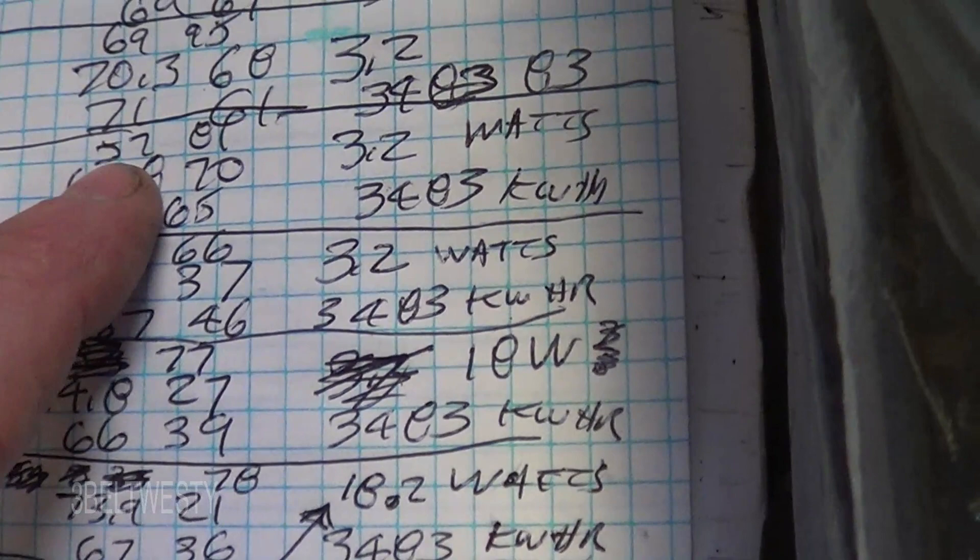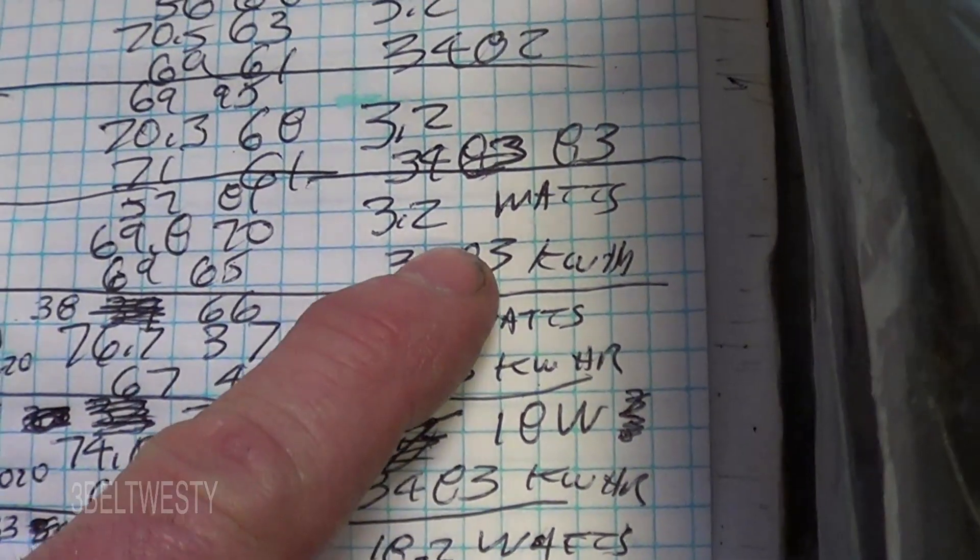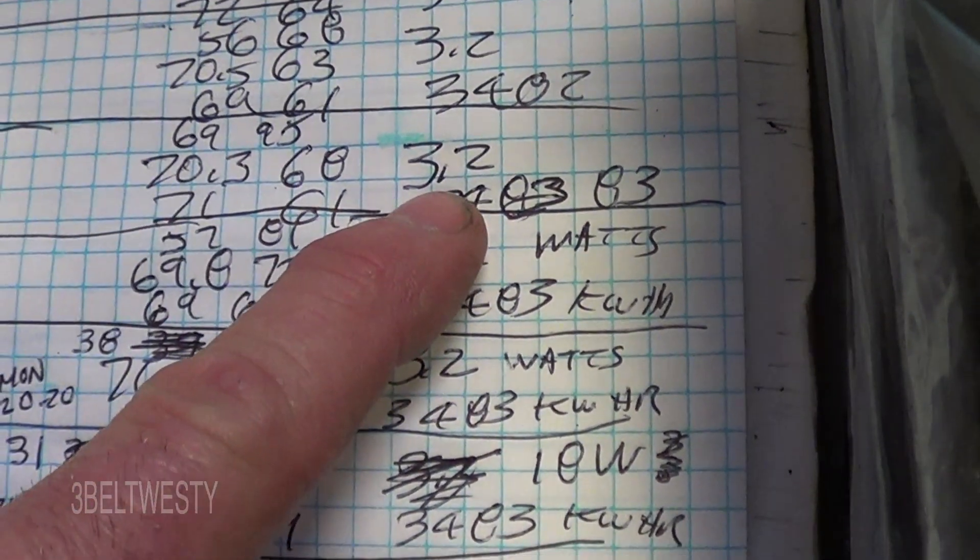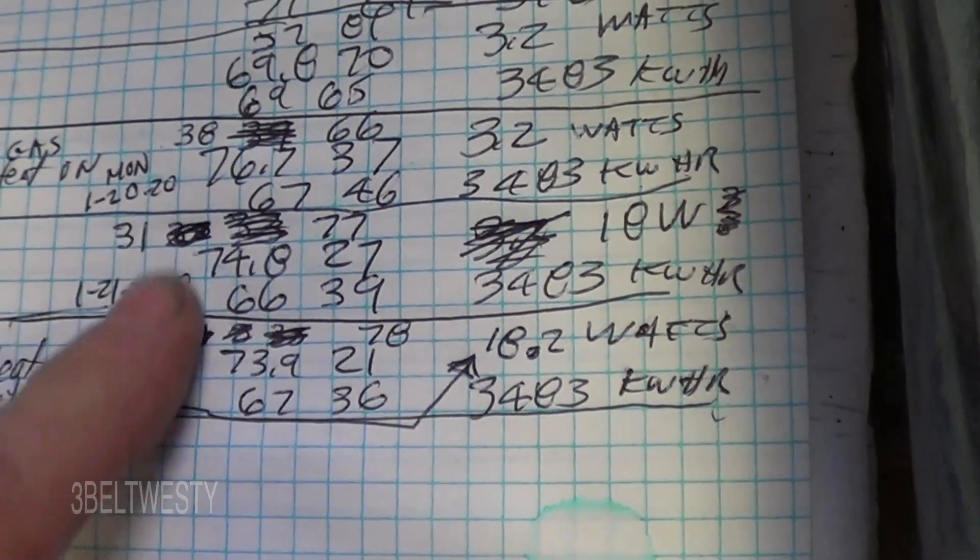If you go back earlier, here it was 57 degrees, 3.2, 69 degrees, 3.2. So the cold front came through.